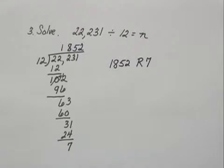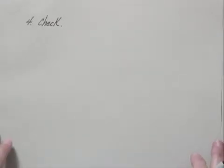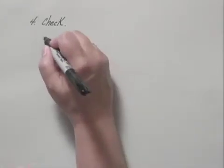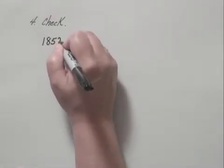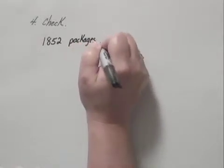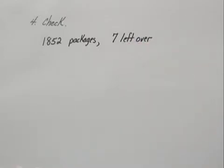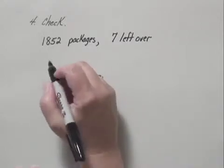Now in the fourth step, check, we need to think what that number actually means. That would mean we would have 1852 packages that we could make and 7 left over. Does that check?